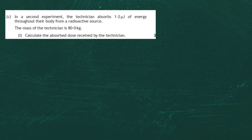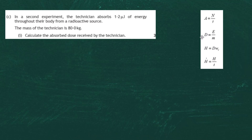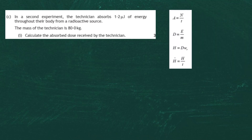Part c: in a second experiment a technician absorbs 1.2 microjoules of energy throughout their body from a radioactive source. The mass of the technician is 80.0 kilograms. For three marks we're asked to calculate the absorbed dose. From the formula sheet, the absorbed dose D equals the energy divided by the mass. We ring that formula and write it down.